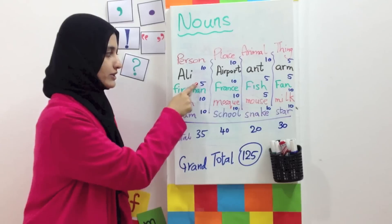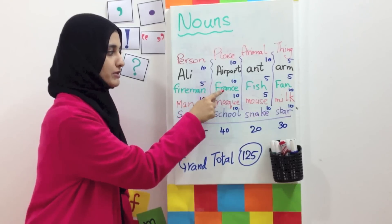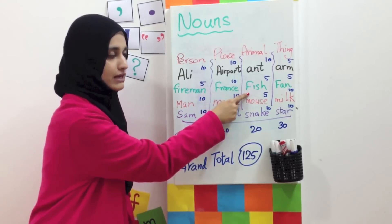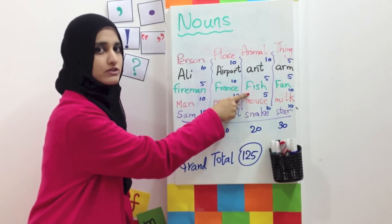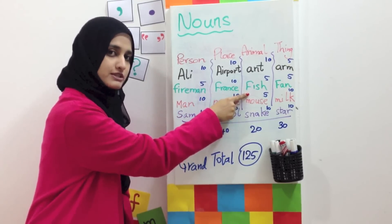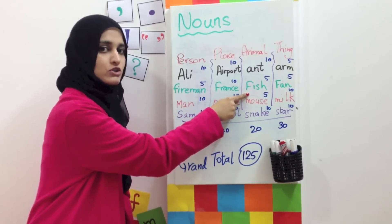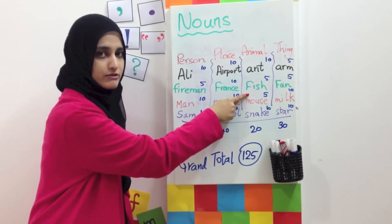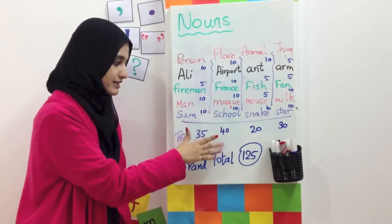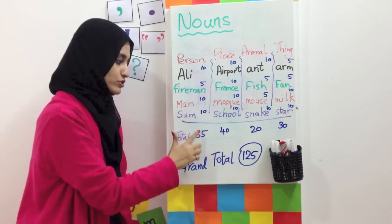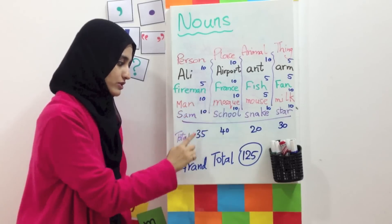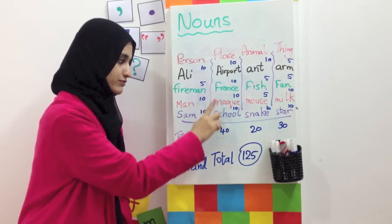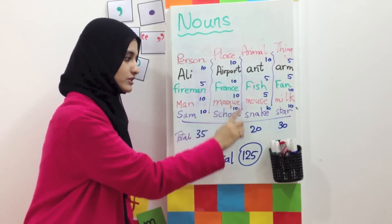Similarly, Fireman — you get 5. Maybe for France you get 10. And 5 for Fish, because your friend also wrote the same noun, so he gets 5. At the end, you are going to do the total — we are going to count all the numbers together for each of the columns.